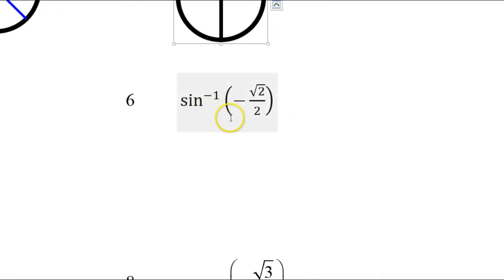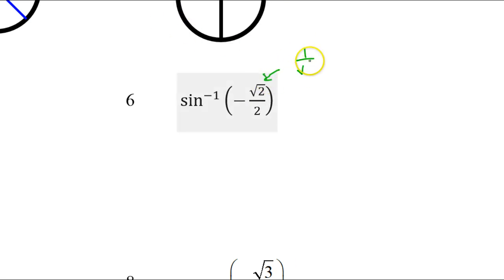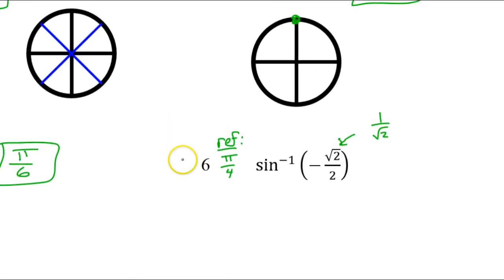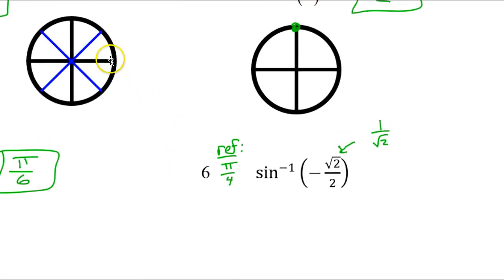Inverse sine is just an angle — I'm looking for the angle whose sine is negative radical 2 over 2. Keep in mind that radical 2 over 2 is the same thing as 1 over radical 2. With this negative sign I have to be careful, so I need to talk in terms of the reference angle first, because that's what we have memorized. The sine of what angle is 1 over radical 2? We've memorized that that is pi over 4. The sine of pi over 4 is positive 1 over radical 2.